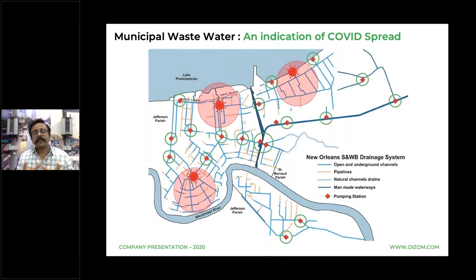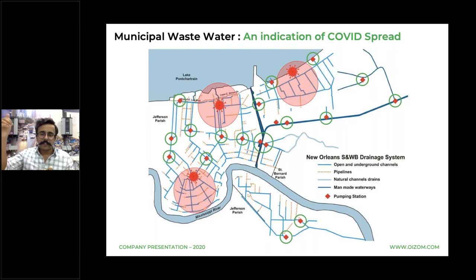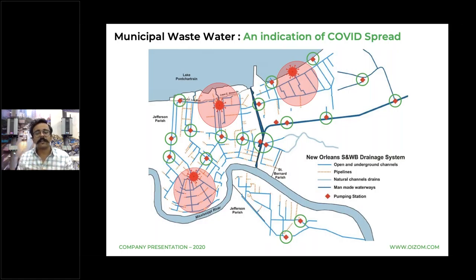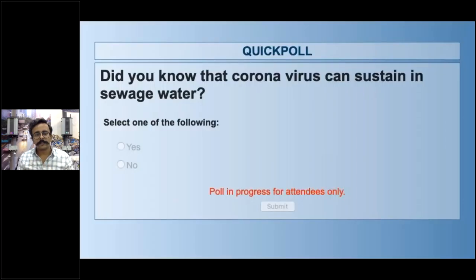This is an area where, in case there are asymptomatic patients in a region, we won't be able to identify them without testing. Such intelligent data — measuring the level of virus traces from a region's sewer system — can be provided to authorities to help medical teams identify cases accordingly.